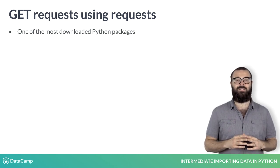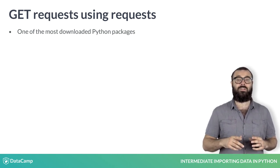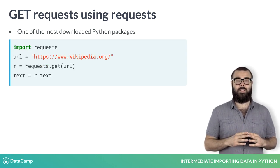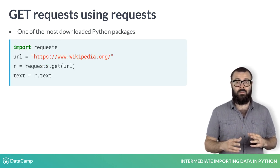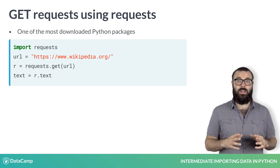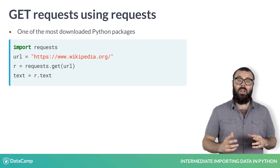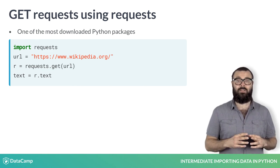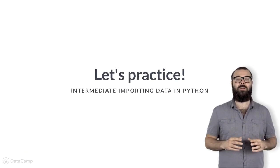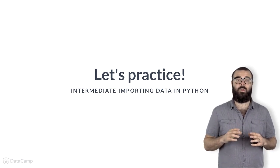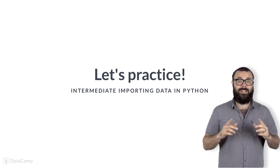All the cool kids are doing it. Let's now see requests at work. Here you import the package requests, specify the URL, package the request, send the request, and catch the response with a single function, requests.get. Finally, you apply the text method to the response, which returns the HTML as a string. Let's get you hacking away at pulling down some HTML from the web using GET requests. Get coding!